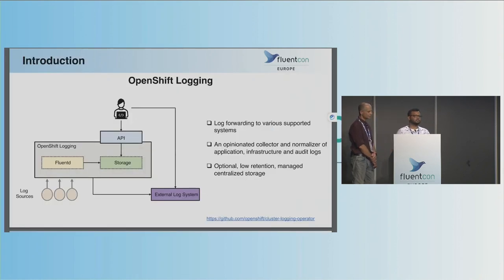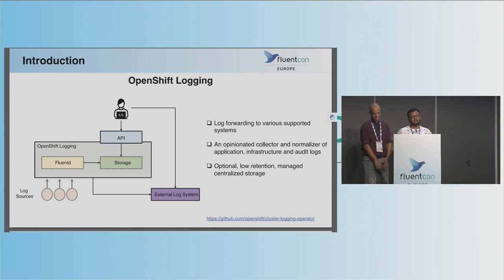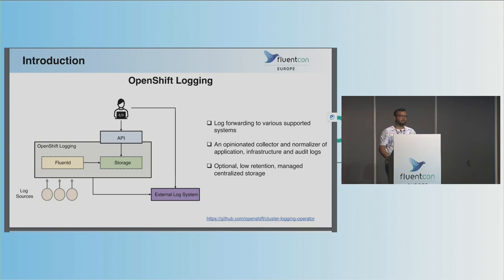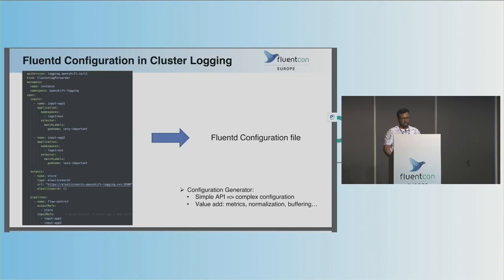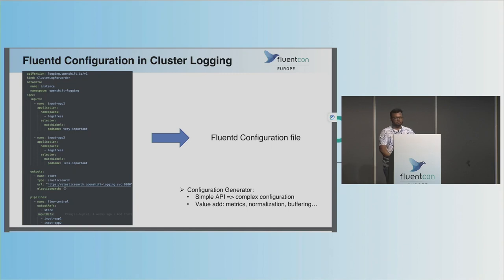I'd like to introduce what OpenShift is. OpenShift is a flagship platform-as-a-service product from Red Hat, built on top of Kubernetes. It allows you to deploy and manage your containers more easily than using a plain Kubernetes environment. OpenShift logging is a subsystem for logging that provides high-level semantics in the form of an API, so you can configure your logging architecture through a custom resource definition.